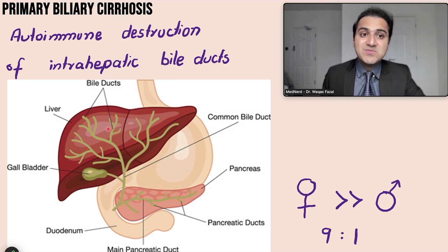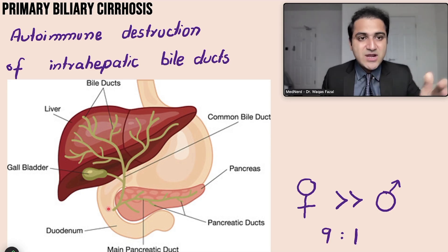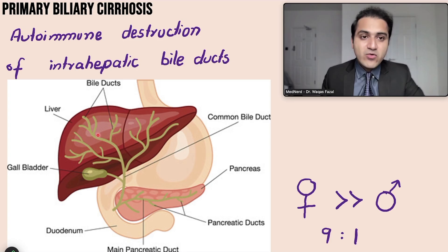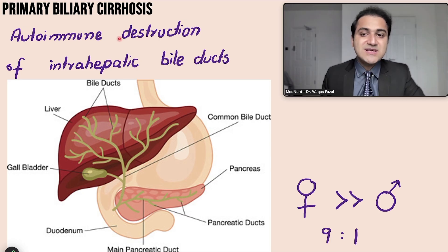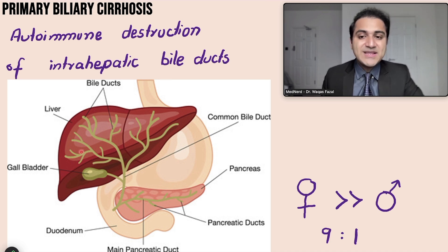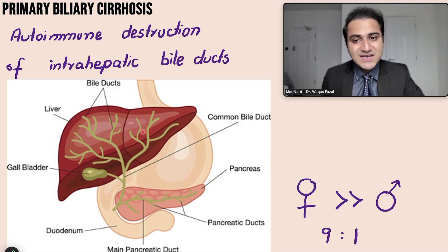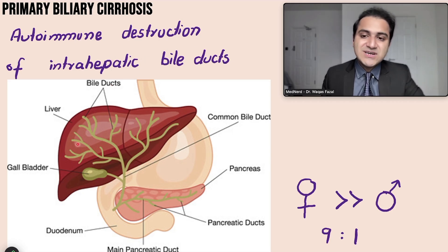Bile also contains many toxins excreted from the liver; those toxins pass into the intestines and are removed from the body in the feces. In primary biliary cirrhosis, the intrahepatic ducts inside the liver that collect bile and deliver it to the gallbladder undergo autoimmune destruction — the immune system attacks these ducts.